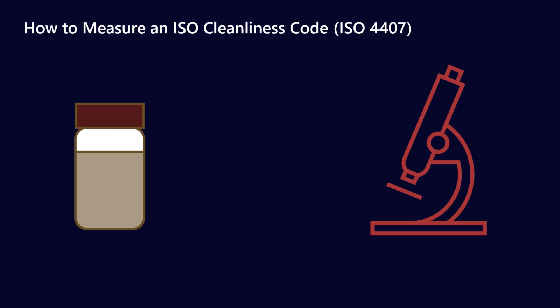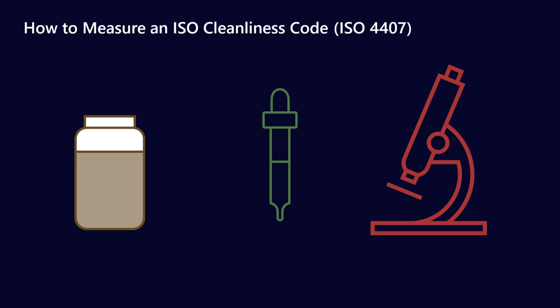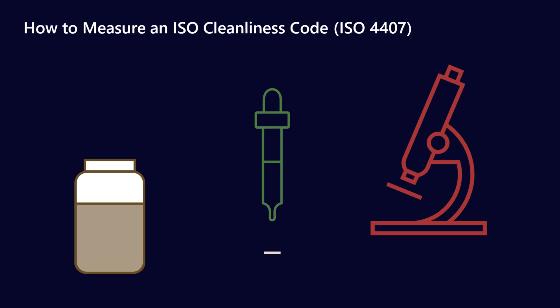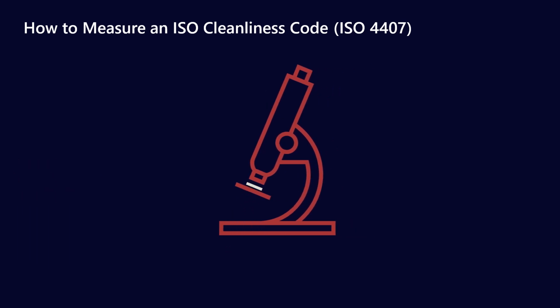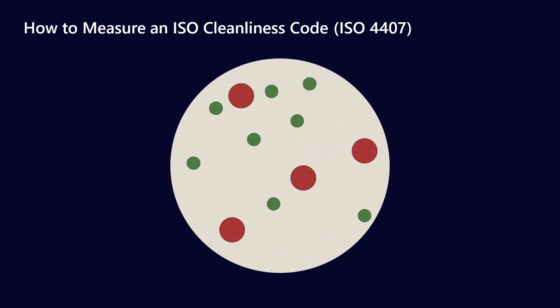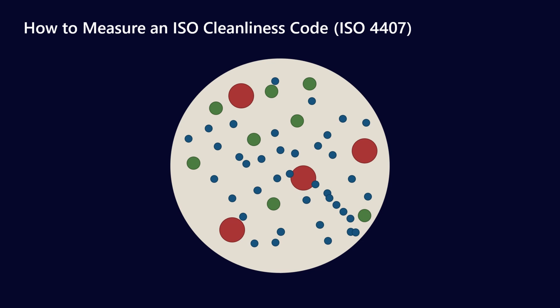So how this method works: you have a used oil sample, and what the lab does is take a little bit of it — probably with an automated machine rather than an actual pipette — and pass it through a filter patch. This filter patch is then looked at under a microscope, where you'll see a whole bunch of different particles of different shapes and sizes. To simplify for this presentation, we have three different sizes of particles roughly in the 4, 6, and 14 micron range.